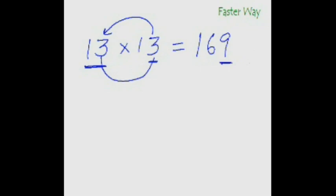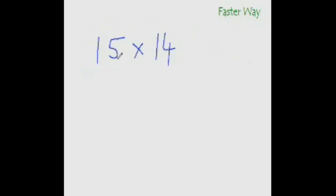See, it's so simple. What is 15 times 14? Add this 4 to this entire number. 15 plus 4 is 19. For the last digit, 5 times 4 is 20. So you carry forward 2, write 0 here. 19 plus 2 is 21. So the answer is 210.